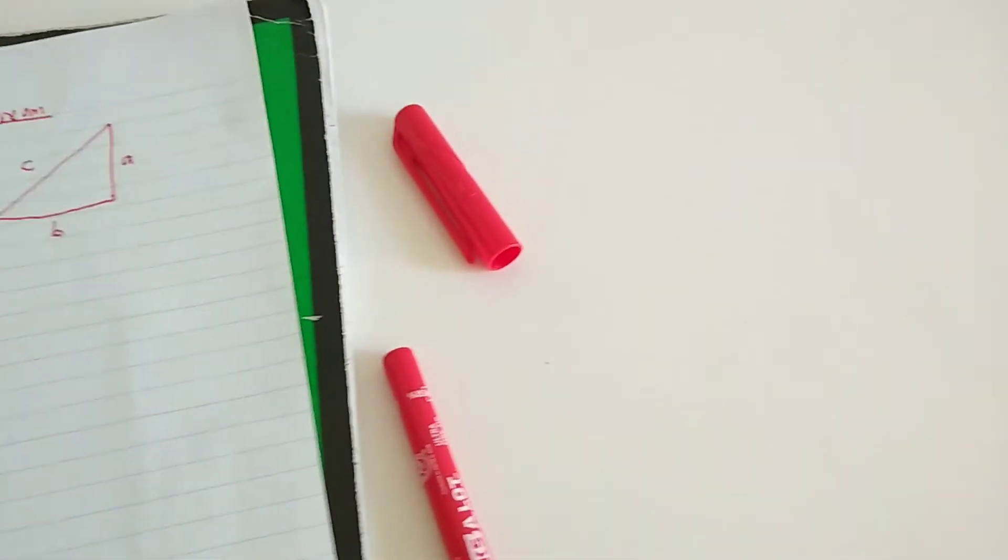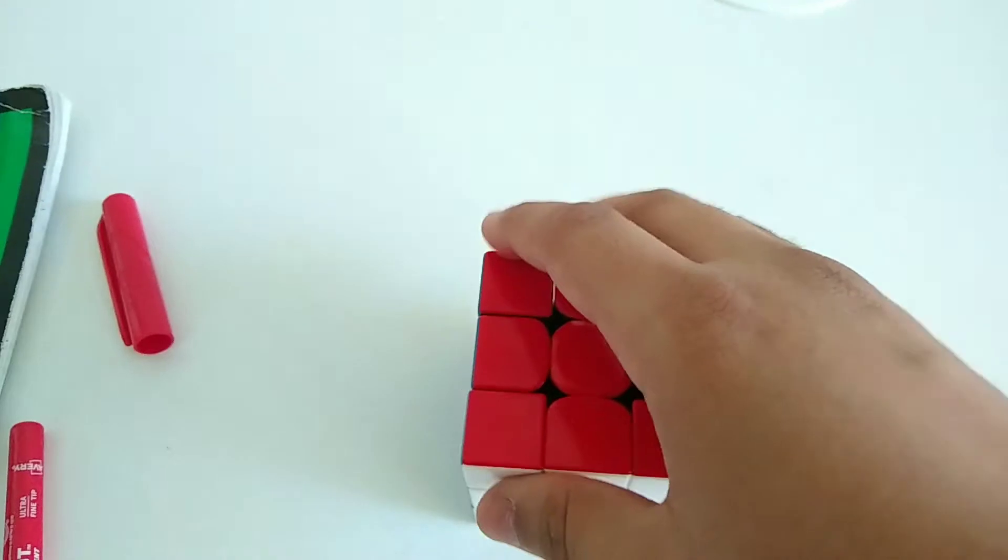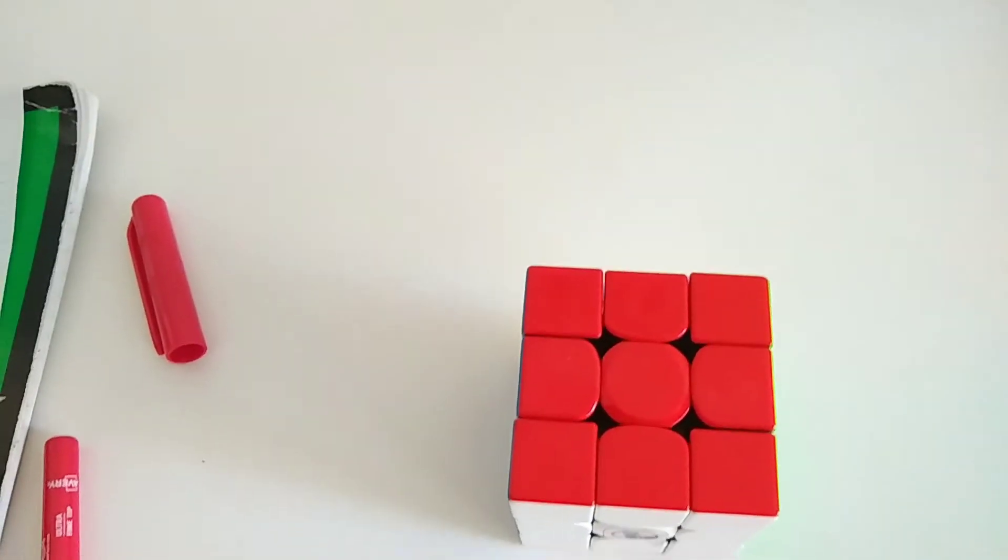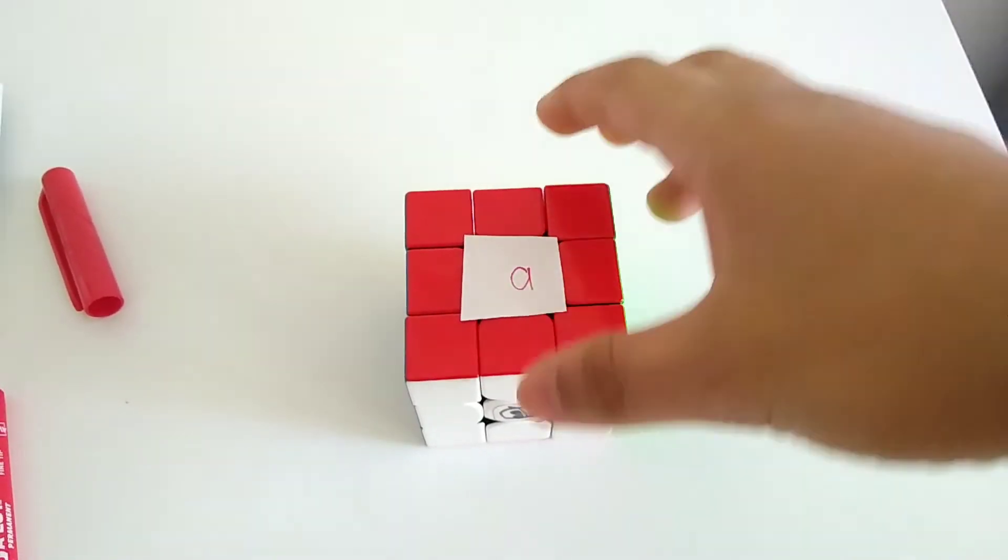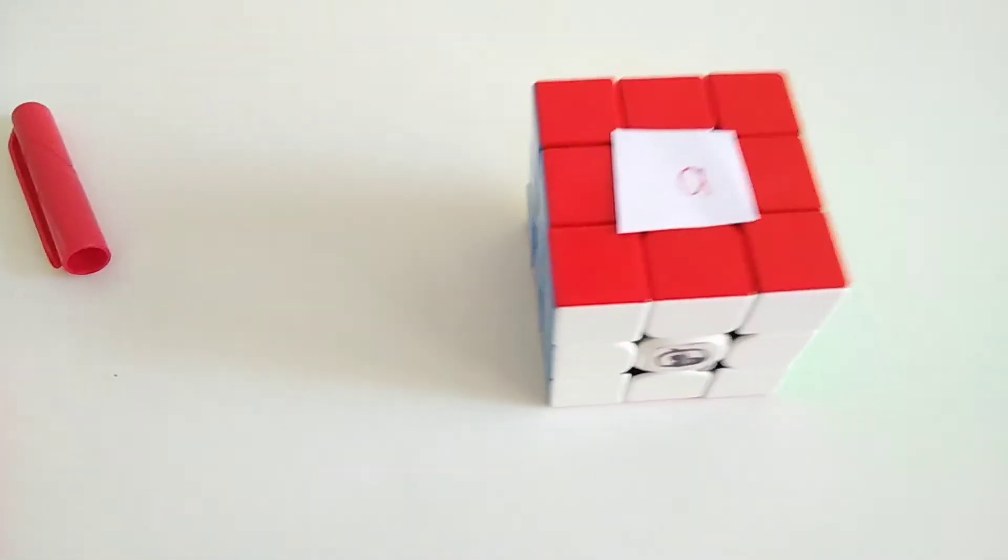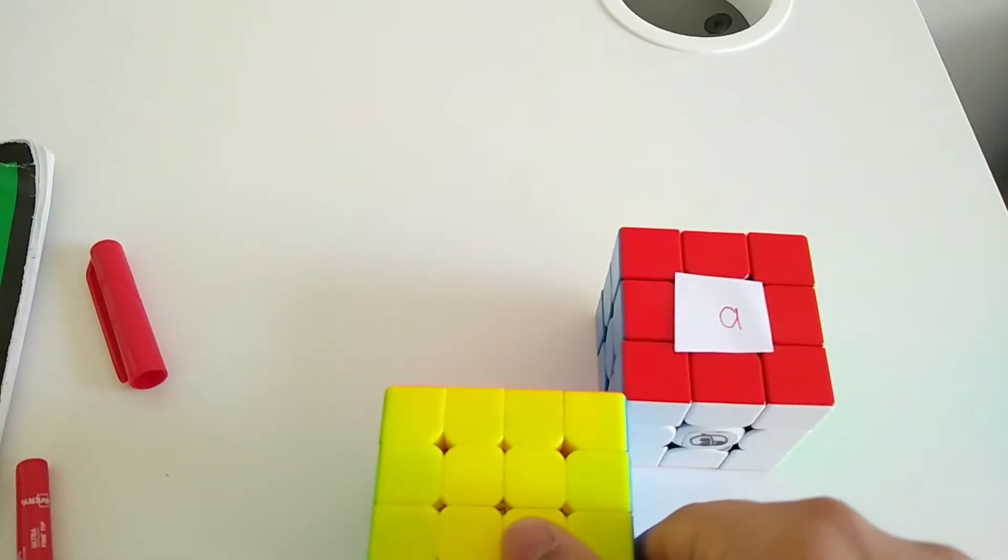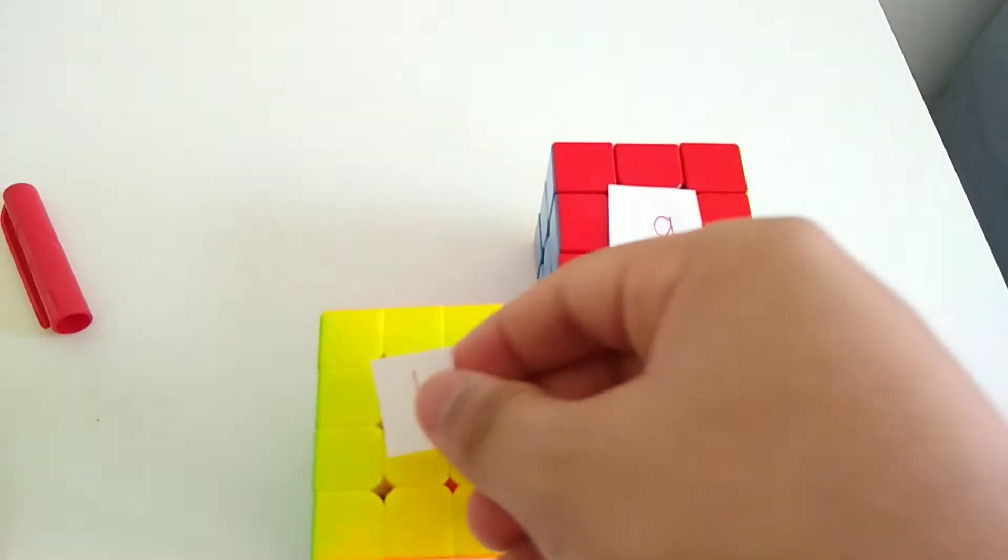And using Rubik's Cubes, we can use this 3x3 right here as the opposite side. So this will be a. And this 4x4 right here can be the adjacent side. So this will be b.